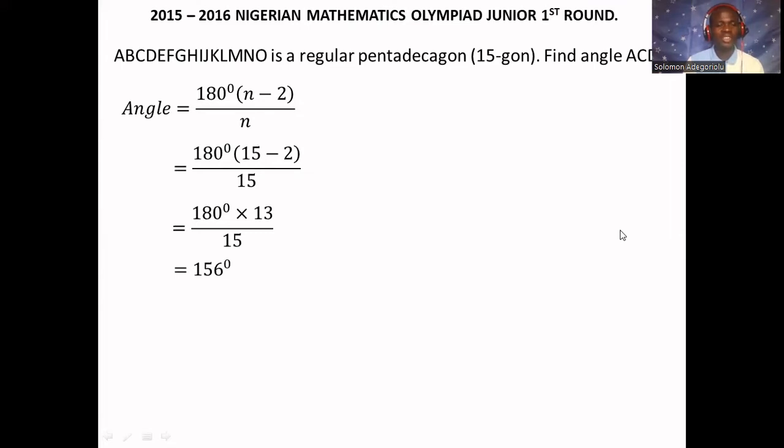We have another method of solving this. We take a look at the exterior angle of a regular polygon. The exterior angle of a regular polygon, the sum is equal to 360. So to get each exterior angle, we need to divide 360 degrees by the number of sides. That is method two.